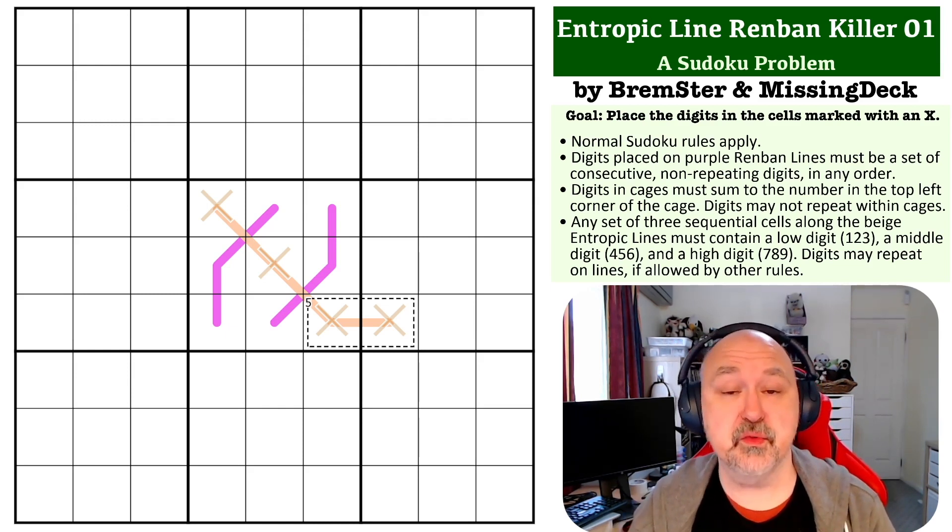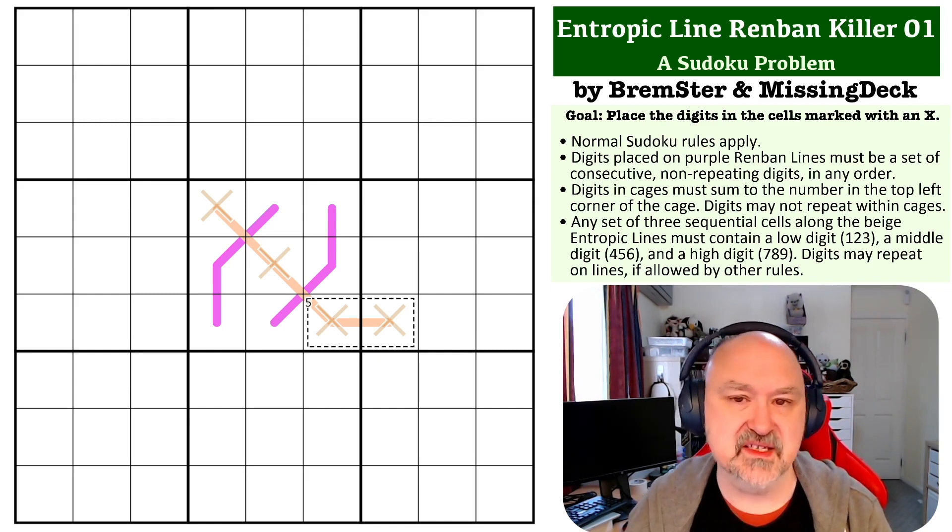There is a link below where you can open this grid and attempt it yourself. You must place the digits in all of the cells marked with the beige Xs. They're a little hard to see in this one, I know, but consistency.